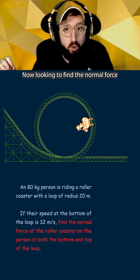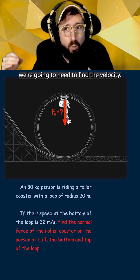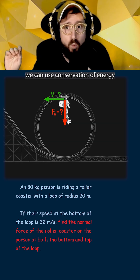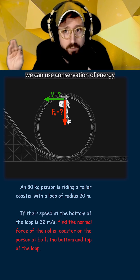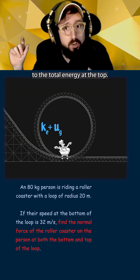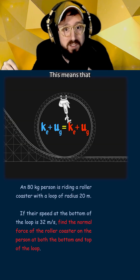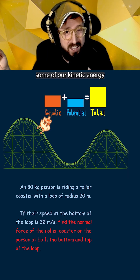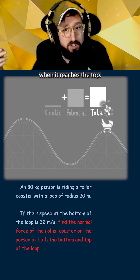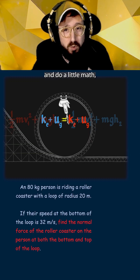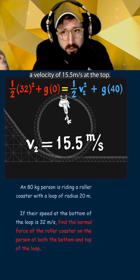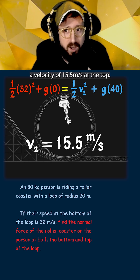Now looking to find the normal force at the top of the roller coaster, we're going to need to find the velocity. We can use conservation of energy to equate the total energy at the bottom of the roller coaster to the total energy at the top. This means that some of our kinetic energy from the bottom will be converted to potential energy when it reaches the top. Setting up our equations and doing the math, this gives us a velocity of 15.5 meters per second at the top.